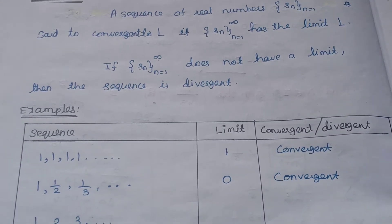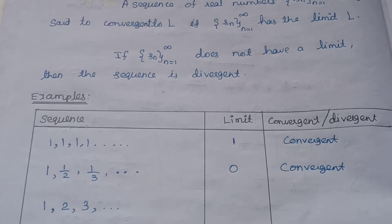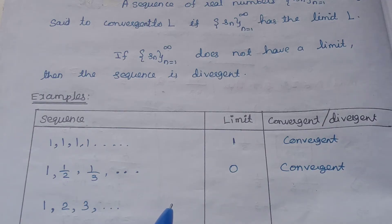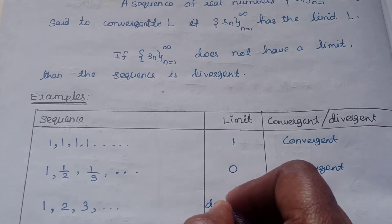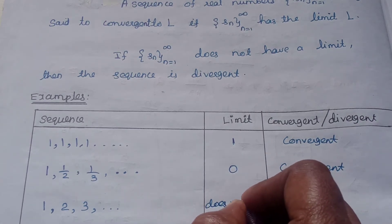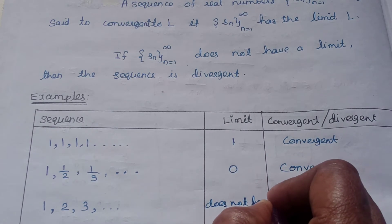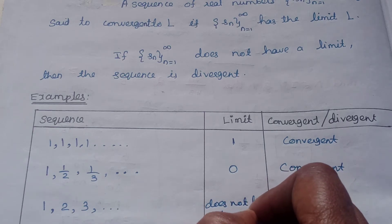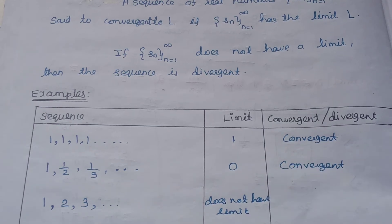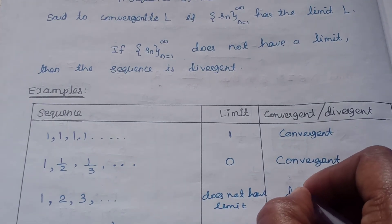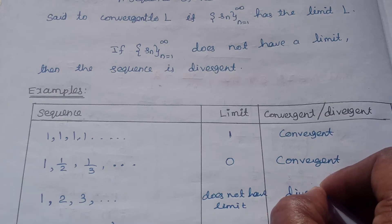Consider the sequence 1, 2, 3, and so on. As n tends to infinity, the limit does not exist. This sequence 1, 2, 3, and so on does not have a limit. So what do we call it? A divergent sequence.